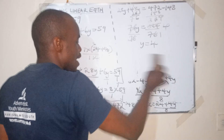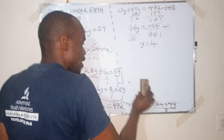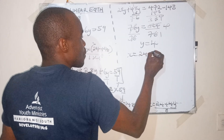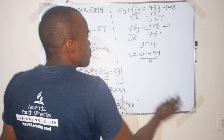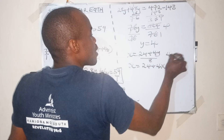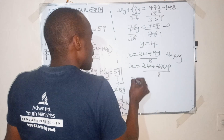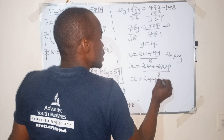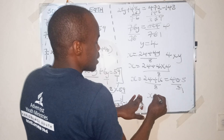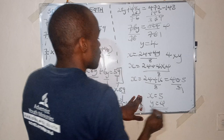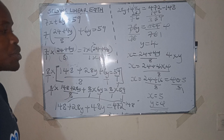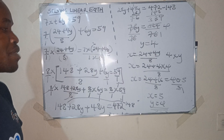Now let us find x. Our x was equal to 24 plus 4y all over 8. Substituting y equals 4: x equals 24 plus 4 times 4, all over 8. That is 24 plus 16 over 8, which is 40 over 8, so x equals 5. That is how we solve using the substitution method. In the next lesson, let us look at using the elimination method.